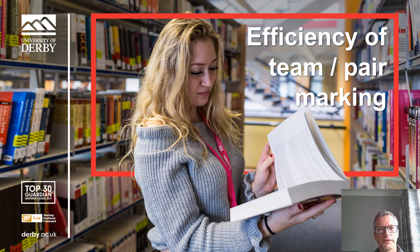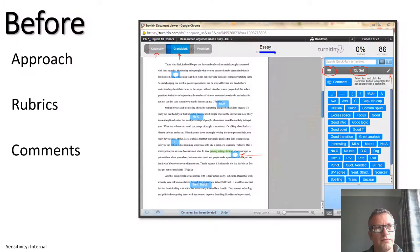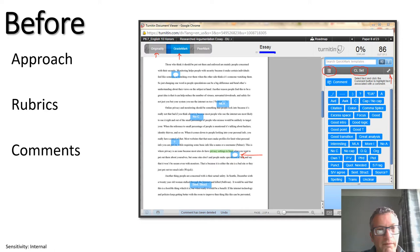Hi, my name is Ian Turner and this short presentation is on efficiency when you're marking as part of a team or pair. The first step is the approach, and it's important as a pair or team to agree how you're going to mark the work in advance. This incorporates three elements: how the assessment rubric will be applied, the type and number of comments made on the work,